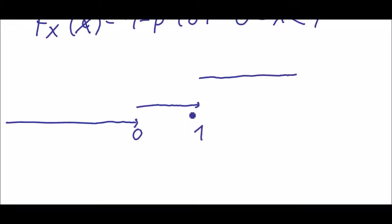As you can see it's not a continuous function because it jumps from 0 to 1 minus p and from 1 minus p to 1. This was the distribution of a so called Bernoulli trial or an experiment with two outcomes, success and failure.